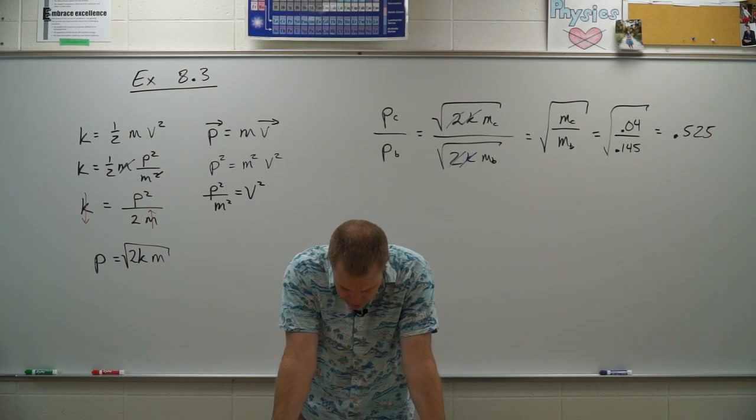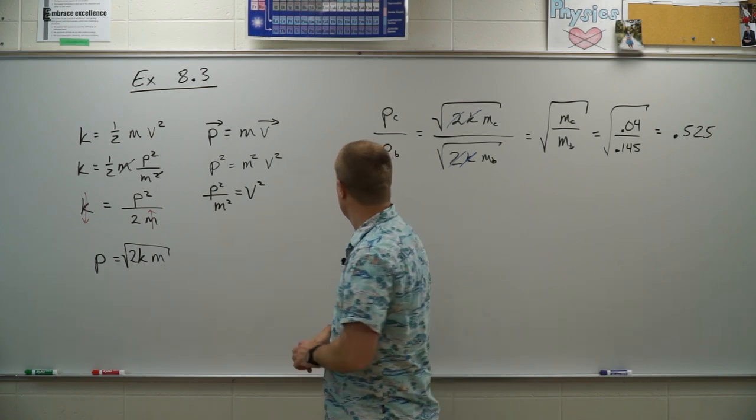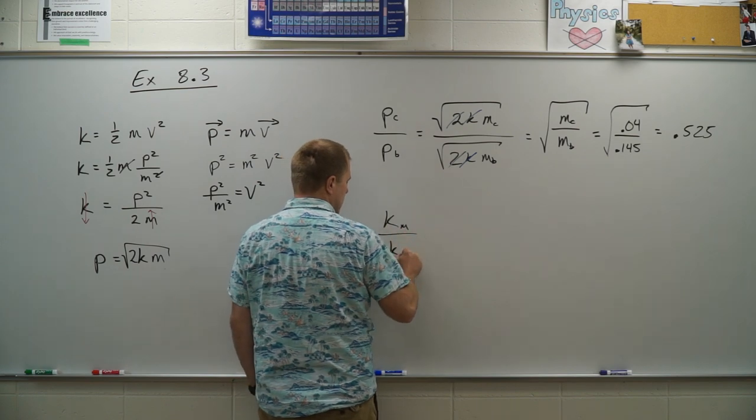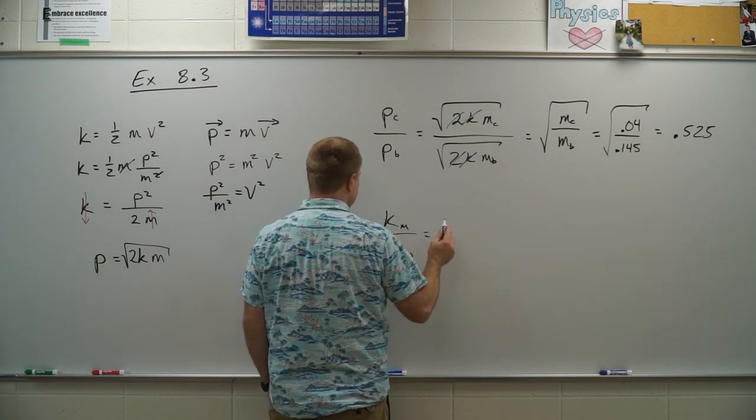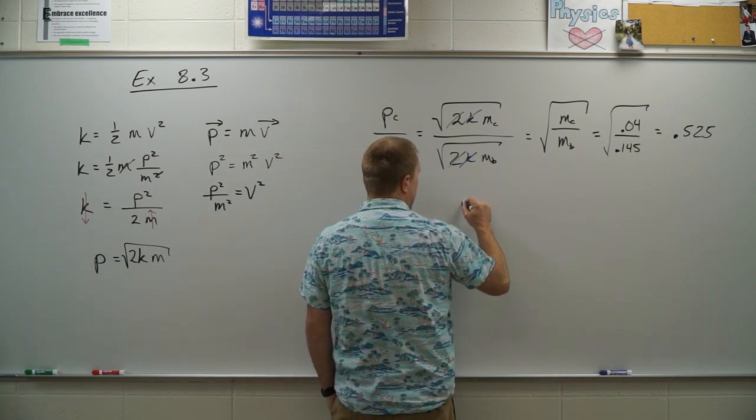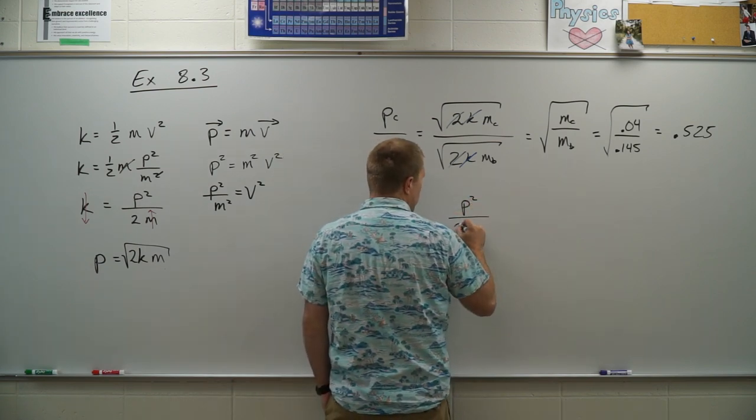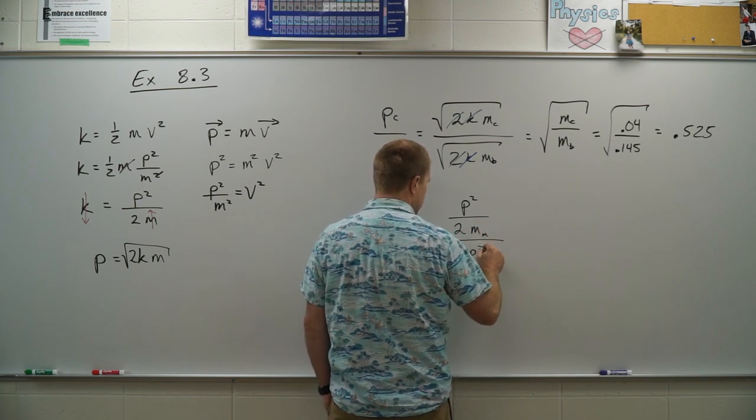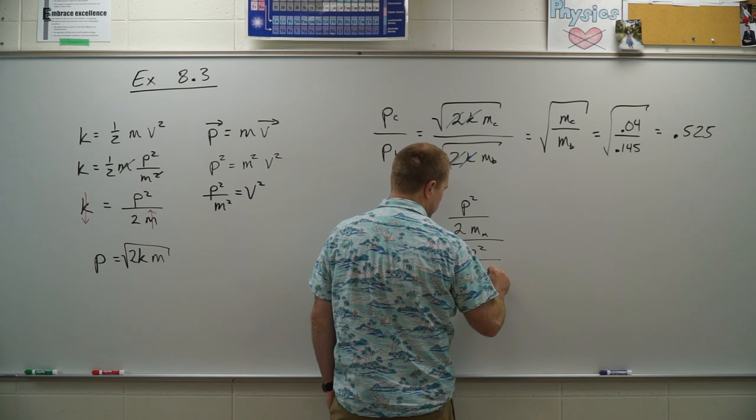And it wants to know what is the ratio of the man's kinetic energy to the woman's. So we have kinetic energy of man to kinetic energy of woman. I have my equation right here. So I have the momentum squared divided by two times the mass of the man divided by the momentum squared divided by two times the mass of the woman.